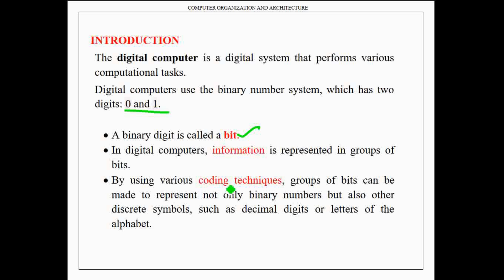By using various coding techniques, these groups of bits can be made to represent not only binary numbers, but also discrete symbols such as decimal digits and letters of the alphabet.